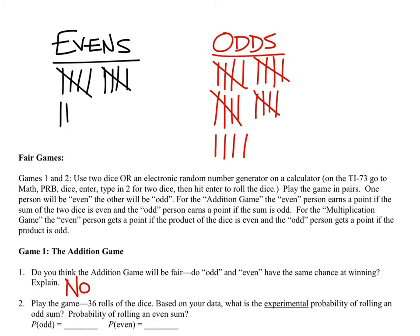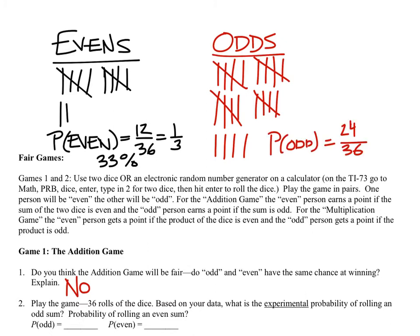The experimental probability of evens is 12 out of 36 rolls, which simplifies to one-third, or about 33%. The probability of odds is 24 out of 36, which simplifies to two-thirds, or about 67%. Adding the fractions gives three-thirds — all of the rolls — confirming these probabilities are experimental because we actually rolled the dice.